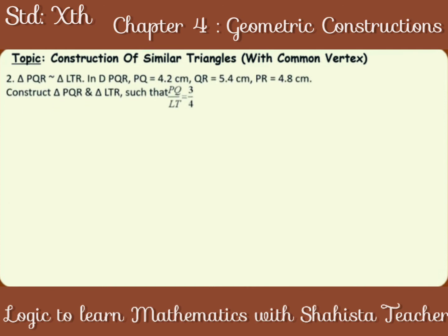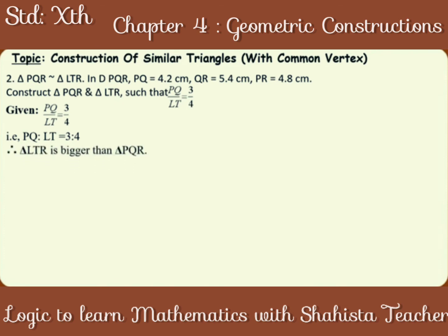Type 2: Construction of two triangles with common vertex. Question number 2. Triangle PQR is similar to triangle LTR. In triangle PQR, PQ is equal to 4.2 cm, QR is equal to 5.4 cm, PR is equal to 4.8 cm. Construct triangle PQR and triangle LTR such that PQ upon LT is equal to 3 upon 4. Analysis: given PQ upon LT is equal to 3 upon 4, that is PQ is to LT is equal to 3 is to 4. From this ratio, we get an idea that triangle LTR is bigger than triangle PQR and R is a common vertex.